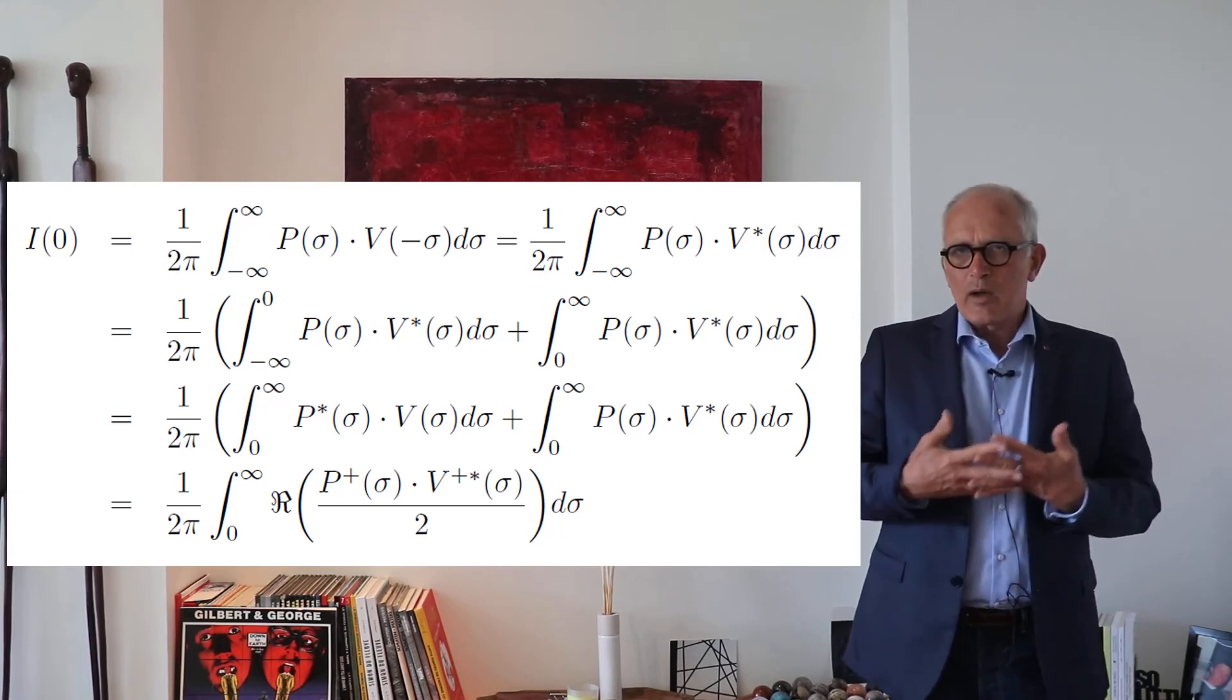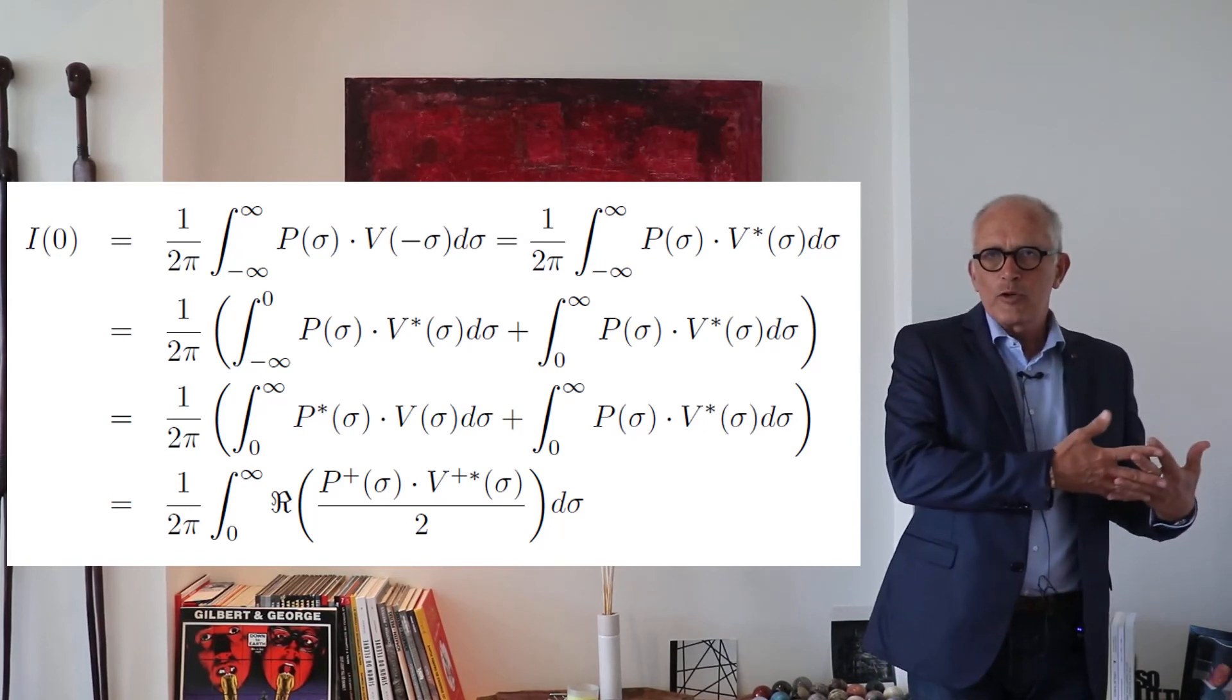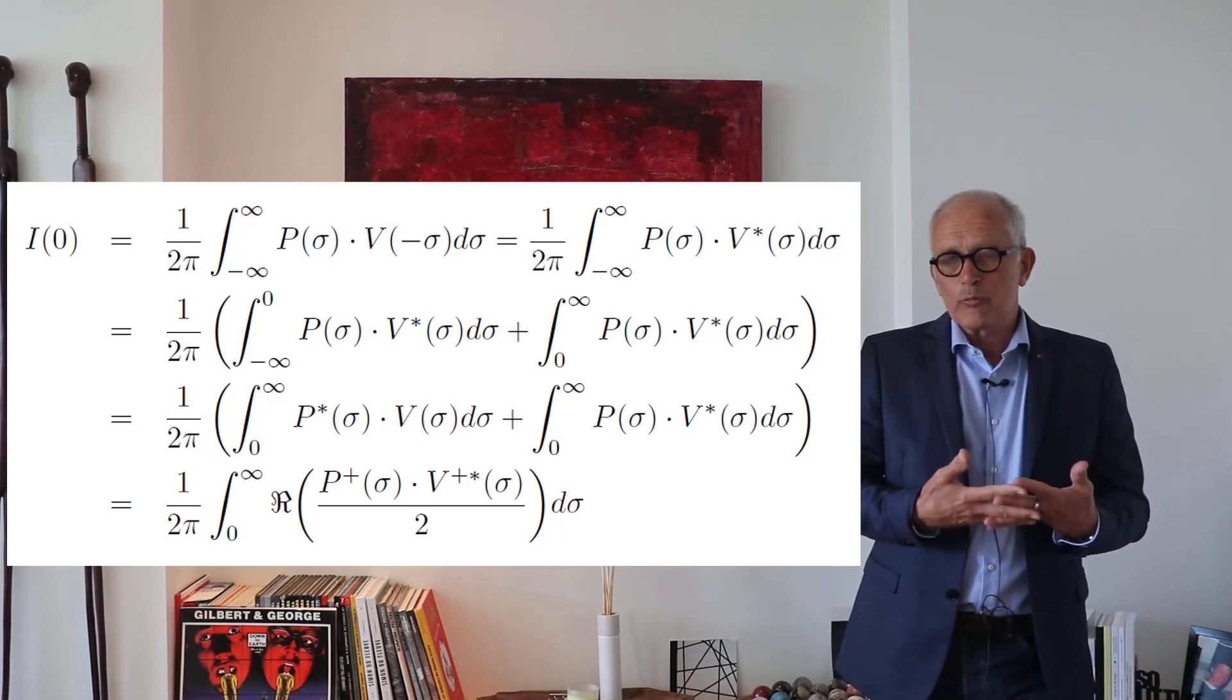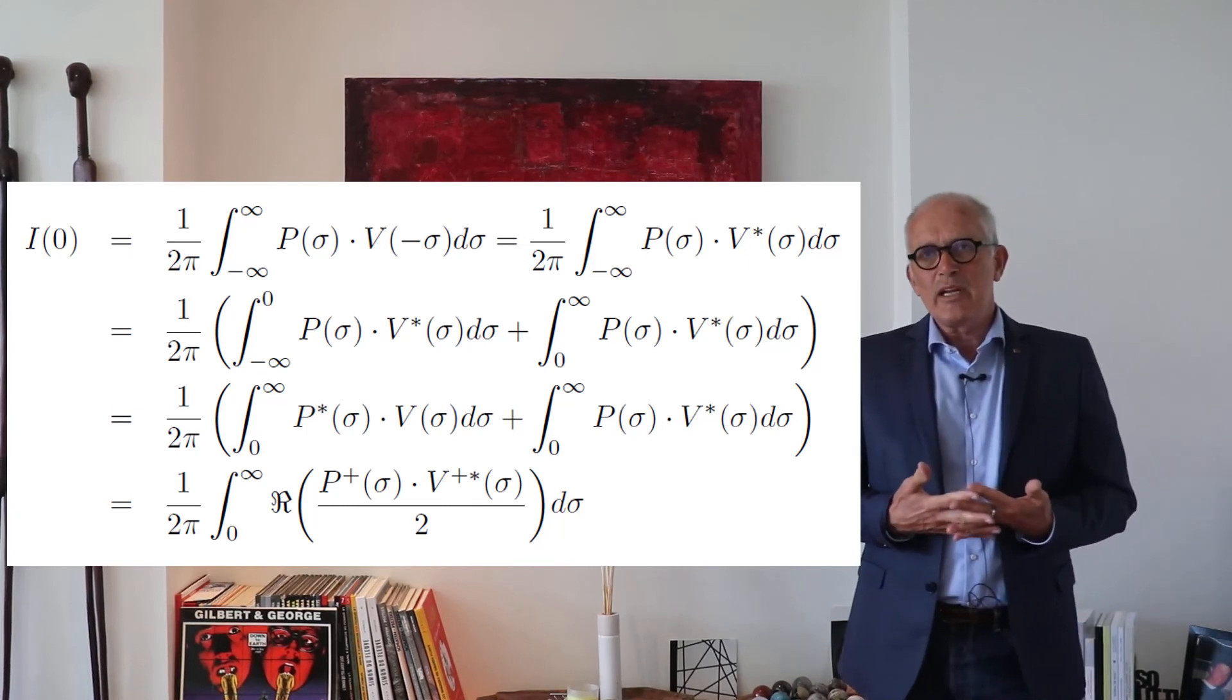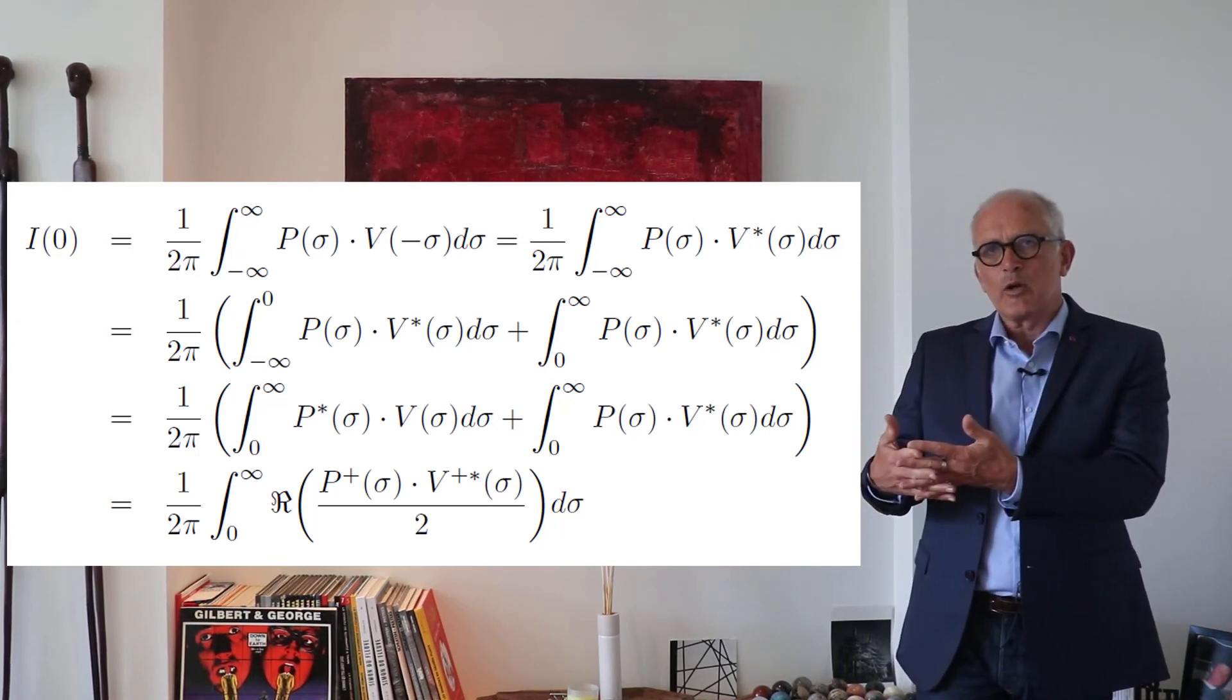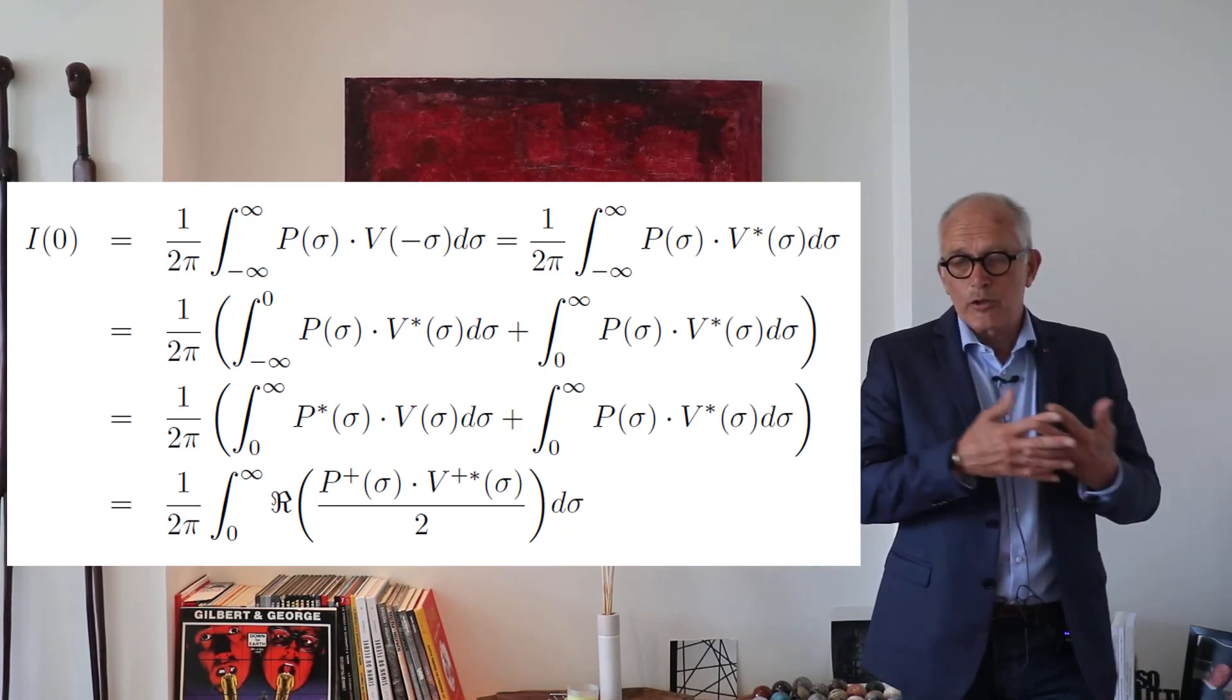So again, using one-sided spectrum, we don't have to integrate over all frequencies from minus infinity to plus infinity, we just have to integrate over positive frequencies from zero to infinity, but the quantity that we integrate is the real part of pressure times the complex conjugate of velocity divided by two, where I mean the one-sided pressure spectrum and one-sided velocity spectrum.